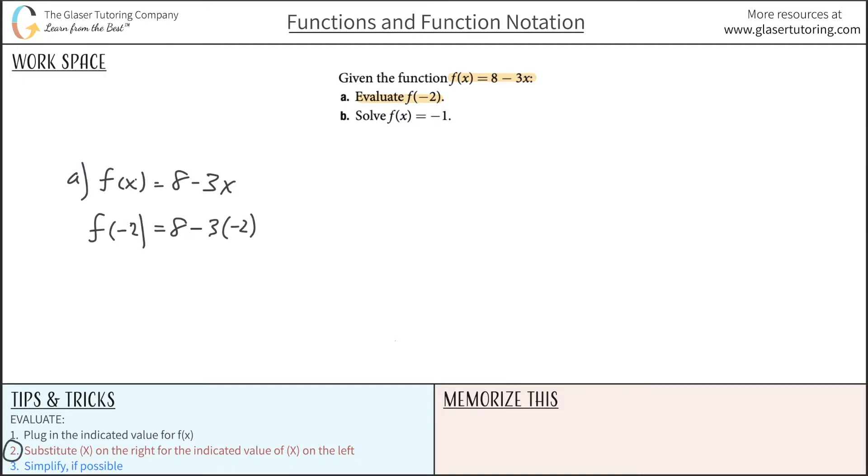That's step number 2 down here. And then step number 3 is just to simplify, if you can, on the right-hand side. So this is going to be 8 plus 6. So f of negative 2 is simply going to be 14. And that takes care of letter A.